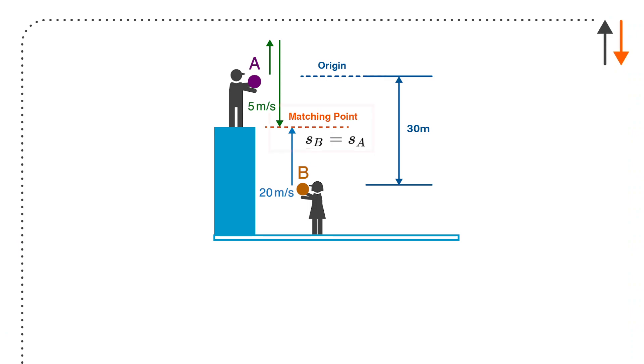So if I look at this, I have a matching point, and the matching point is the big thing. I want the balls to be at the same location. So I'm assuming that the ball goes up and it comes back down. And so ball A goes up with one equation, ball B goes up with another.